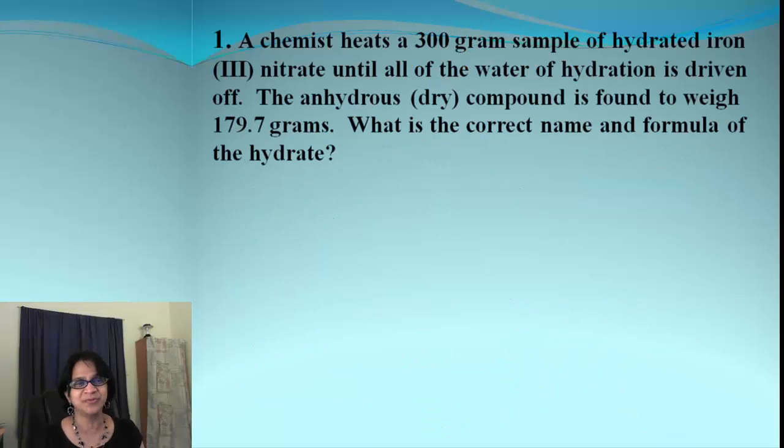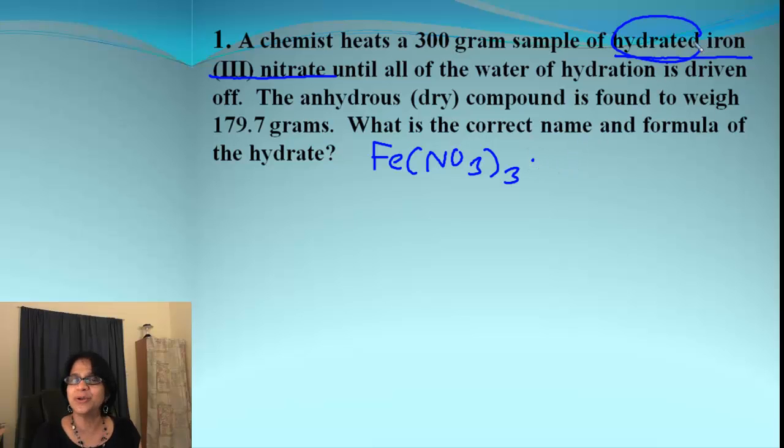So let's begin our very first problem. In this problem we have been given hydrated iron 3 nitrate. Let's get the formula for that which I believe is Fe(NO3)3 and then it's a hydrate but we don't know how many moles. So let's think that's XH2O. Our job is to find out that X now.